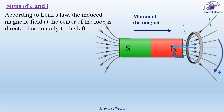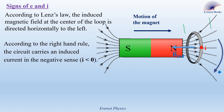Now let's apply the right-hand rule. Curl the fingers of your right hand so that your thumb points horizontally to the left. Your fingers must be curled in this direction, which is the direction of the induced current. Observe the positive sense and the direction of the current, which means that the current is negative.